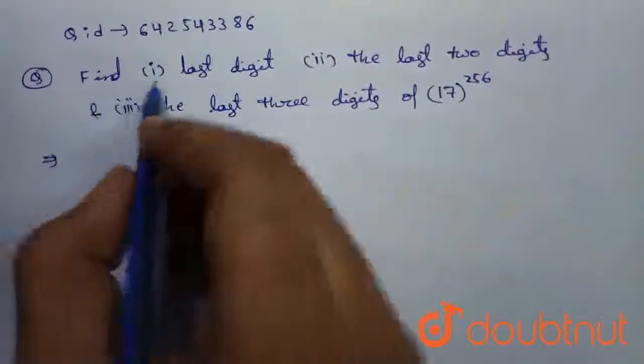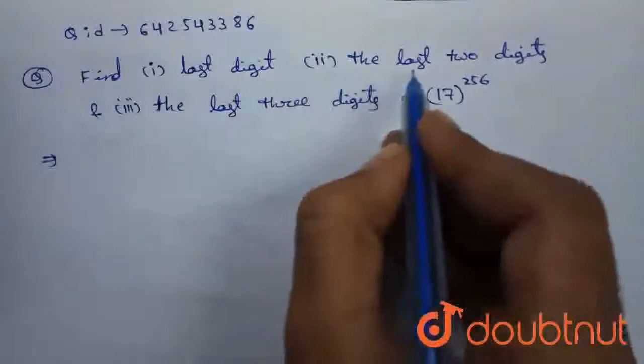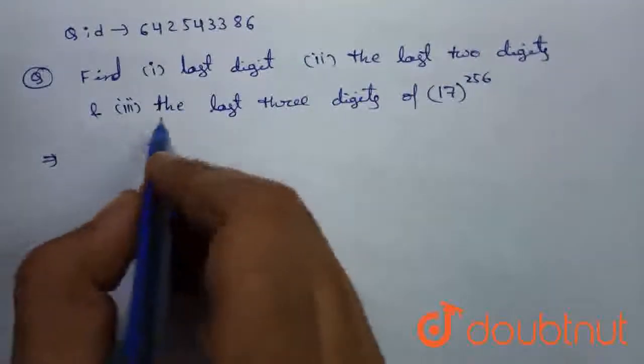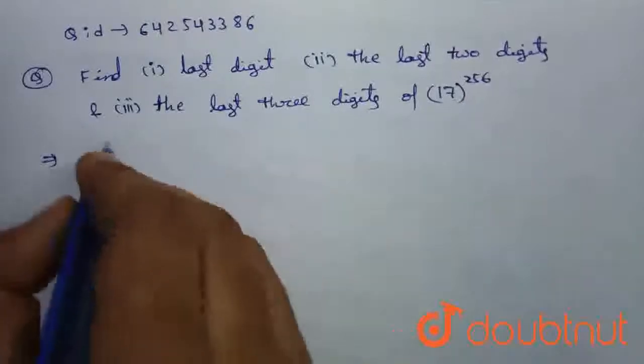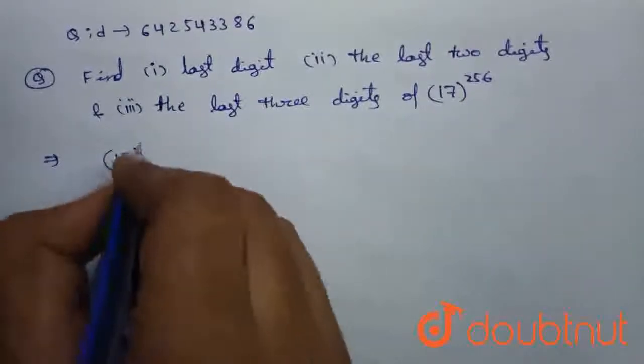Given question is, find the last digit and the last two digits and the last three digits of 17 power 256. We need to write 17 power 256...